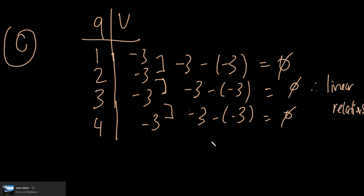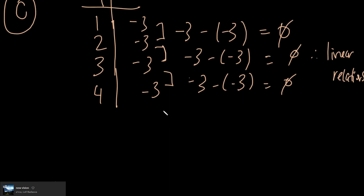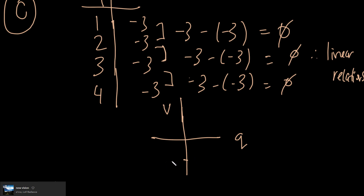In this case, if you graph it out — if Q is the independent variable and V is the dependent variable — you actually have a horizontal line. You can think of this as the line V = negative three, with all the points lying on that horizontal line. So option C is a linear relationship.